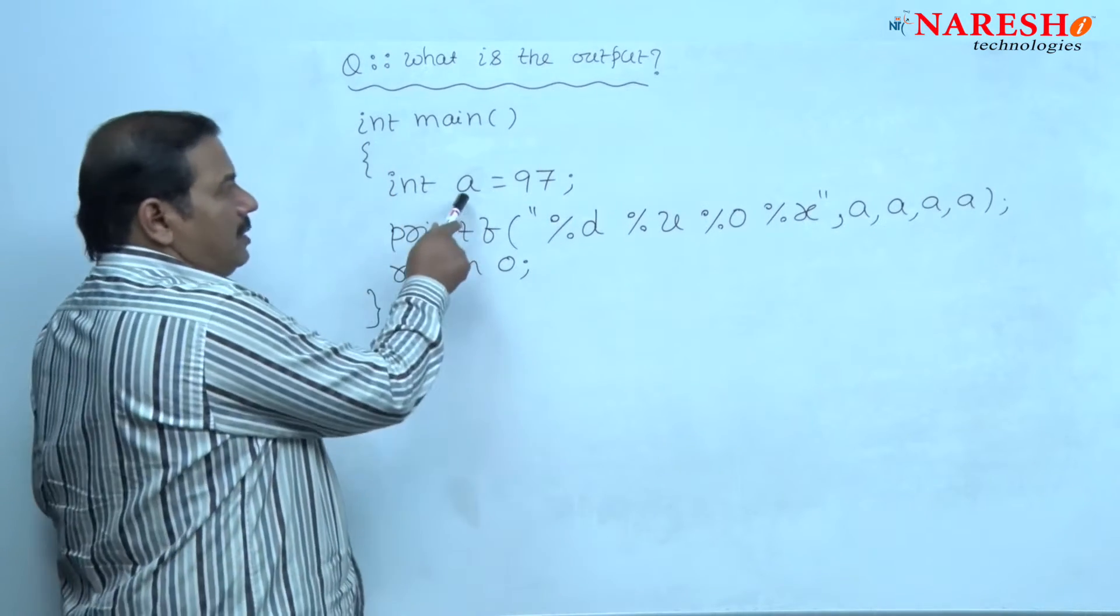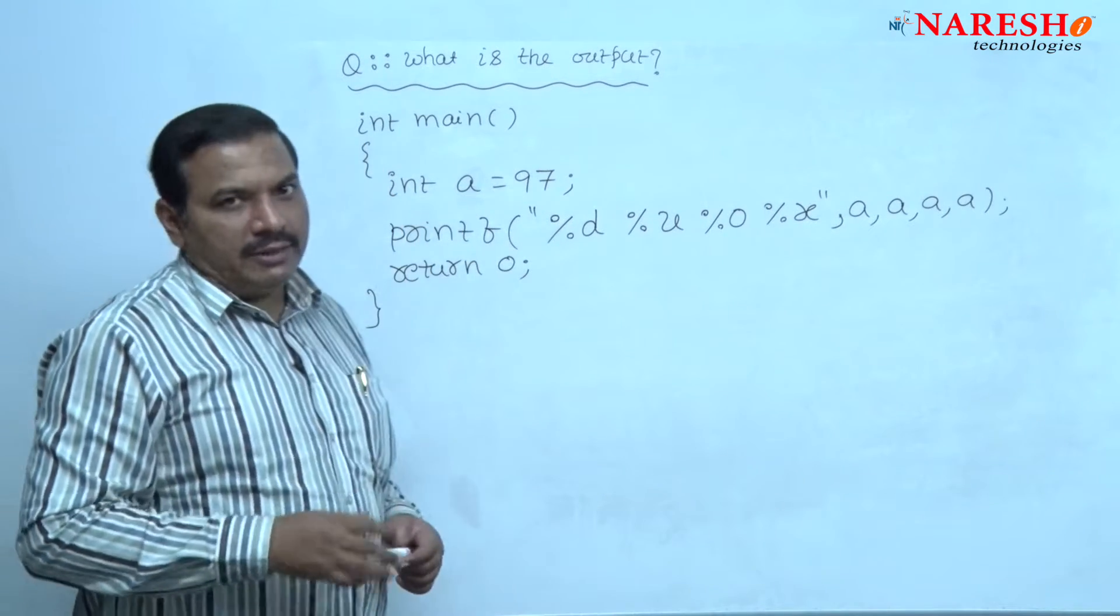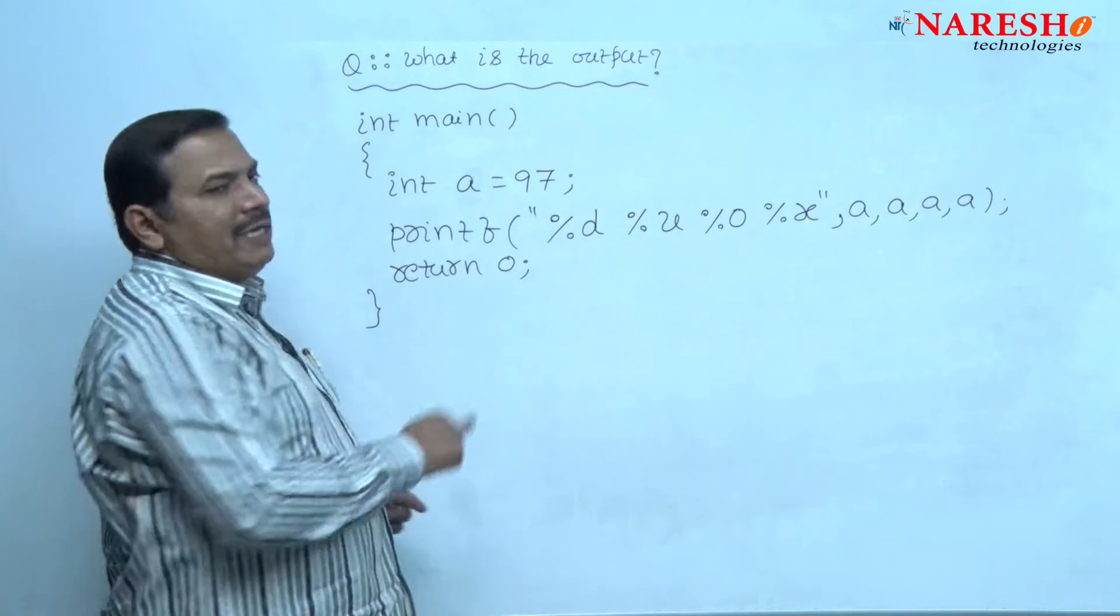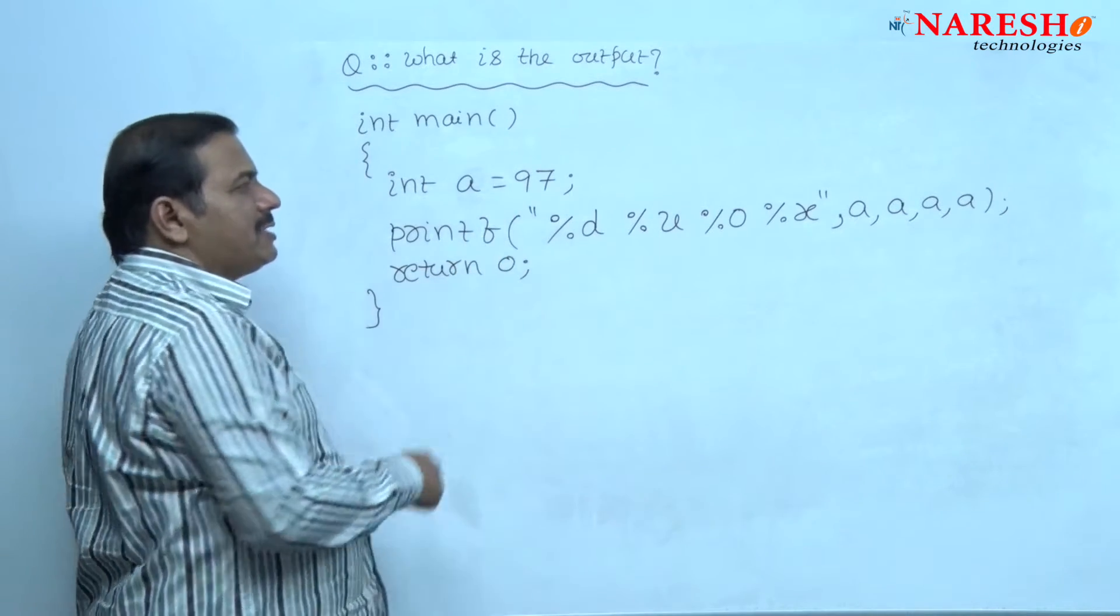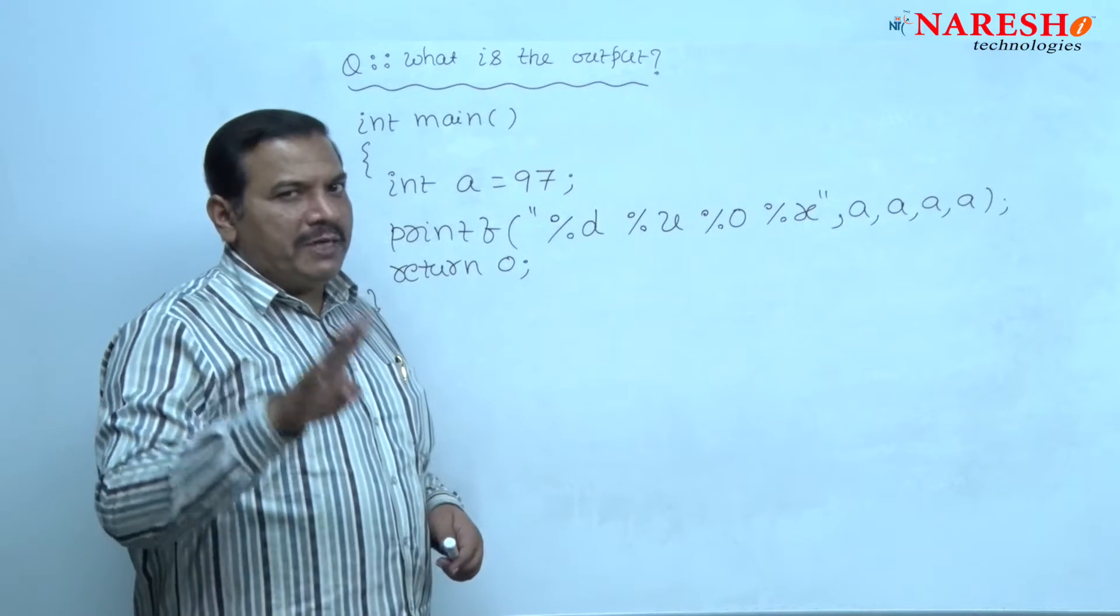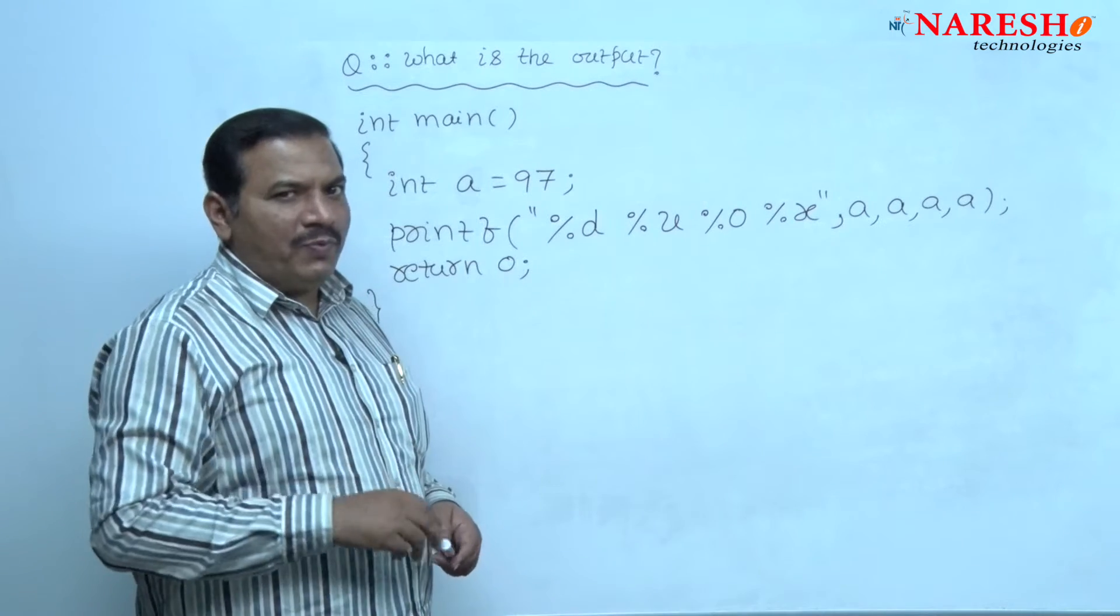Here, value of variable a is 97, it is a decimal integer constant. This decimal integer constant 97 is printing in 4 different formats.